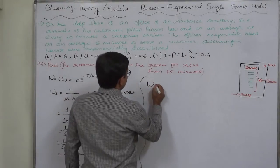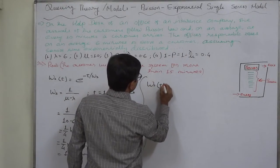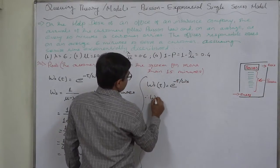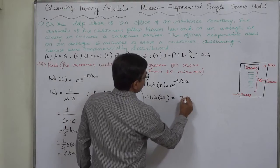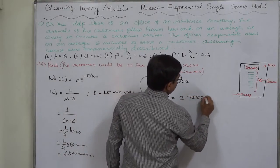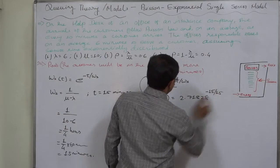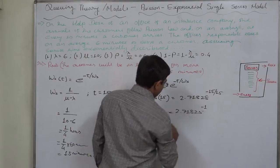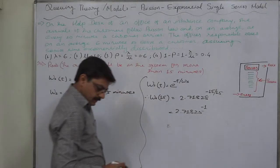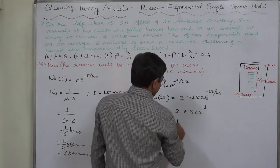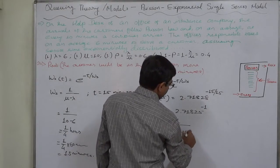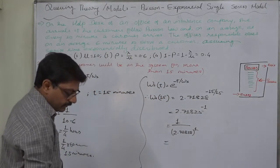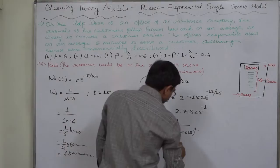So now we can calculate the required thing. WS(t) equals to e raised to minus t by WS. WS(15) equals to 2.71828 raised to minus 15 by 15, that is 2.71828 raised to minus 1. That is 1 upon 2.71828, and if we calculate this, the value comes to nearby 0.31.